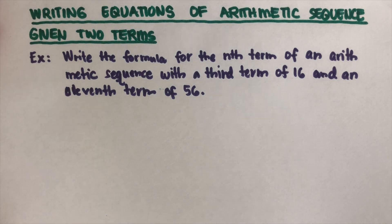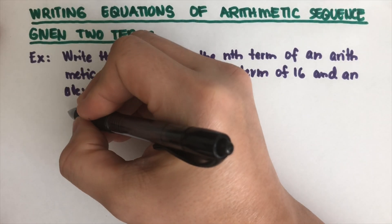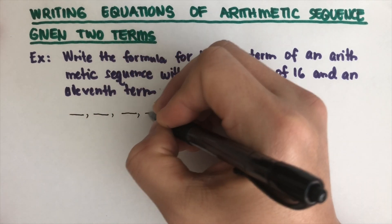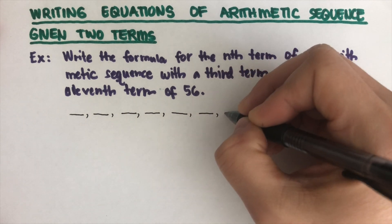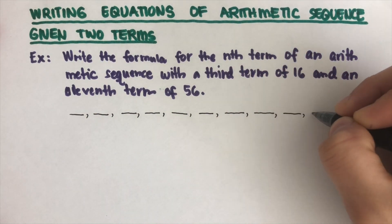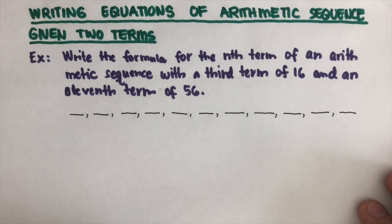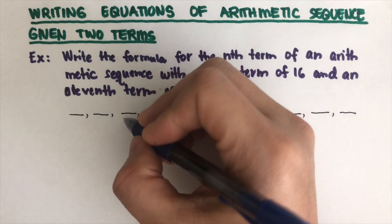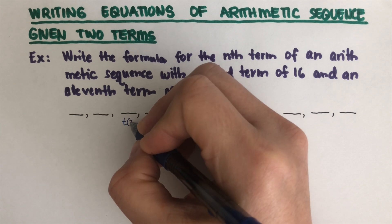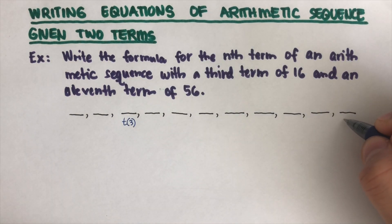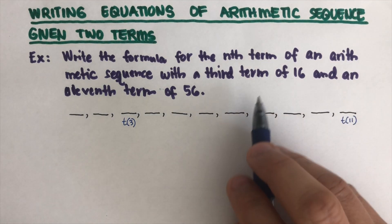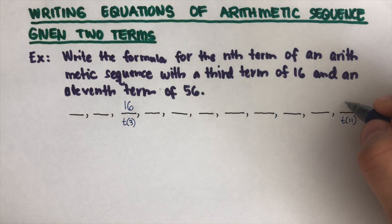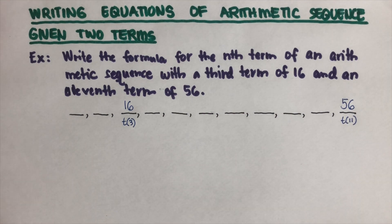We can better see it with 11 blanks: 1, 2, 3, 4, 5, 6, 7, 8, 9, 10, 11. The third term is 16, so we label position 3 as t3, and the 11th term as t11. We write 16 over t3 and 56 over t11.